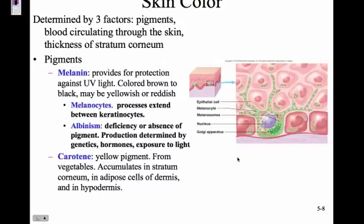Carotene is a yellow pigment from vegetables like carrots, and it accumulates in the stratum corneum and adipose cells of the dermis and hypodermis. If you eat a lot of carotene, it can accumulate and cause your skin to have a yellow color, which is different from jaundice.